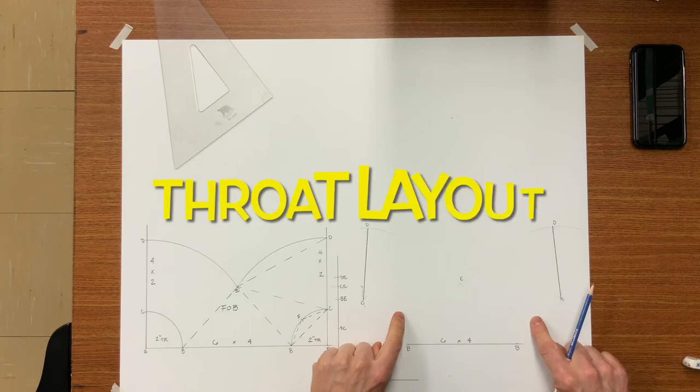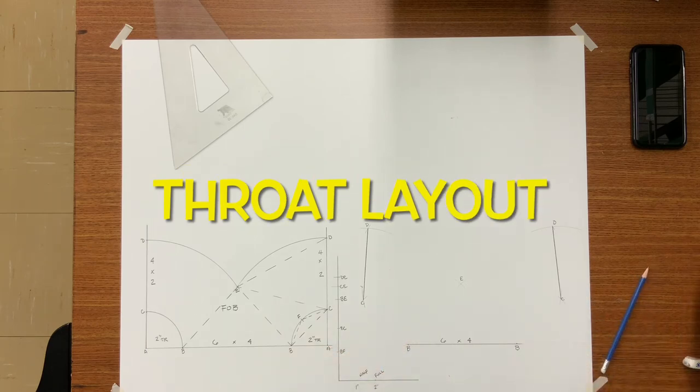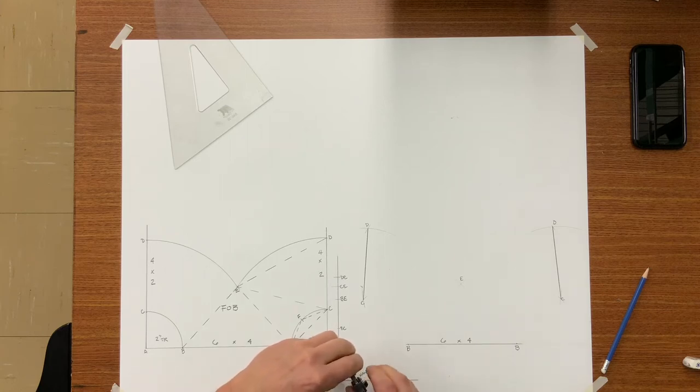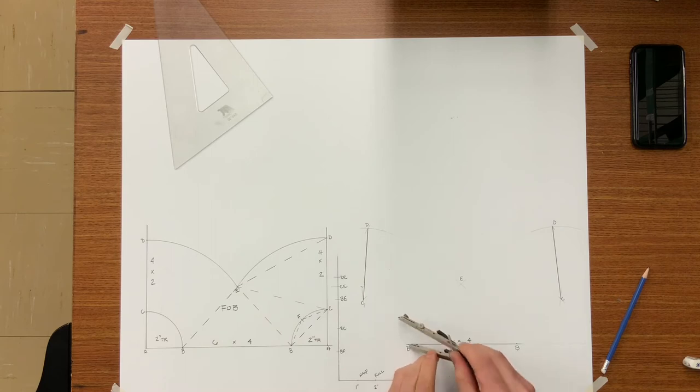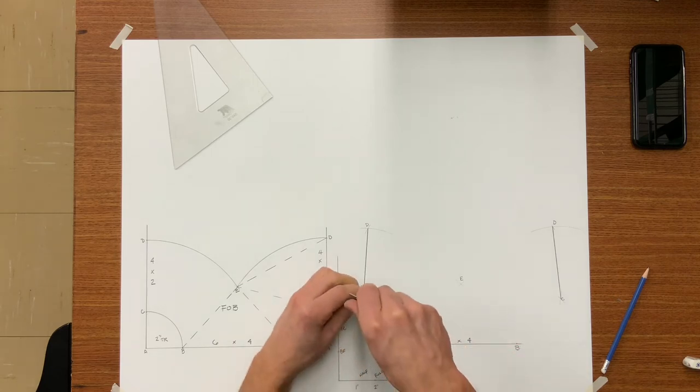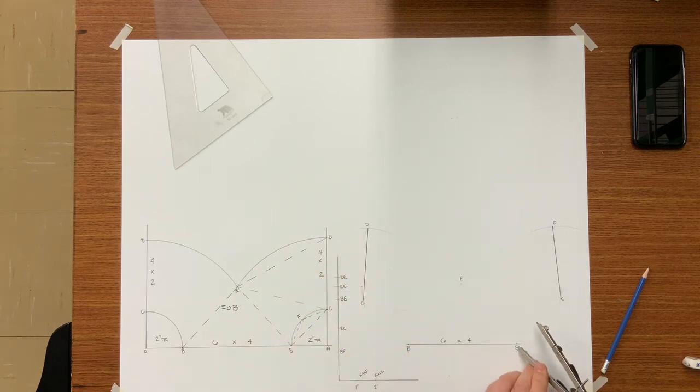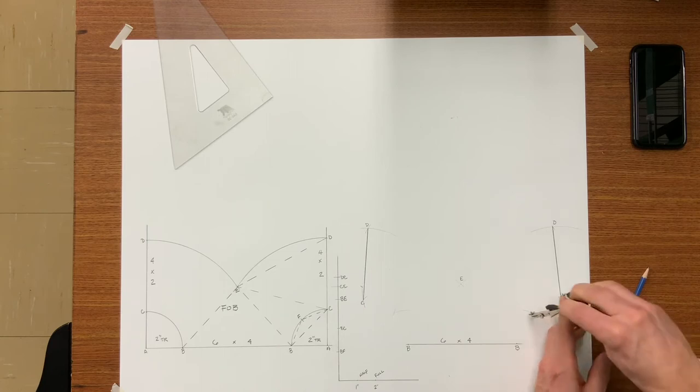Now let's go ahead and try to scribe the throat on our developed cheek. We will need to find F. F is done over a half drop. B to F and C to F are the same length, so let's do this on both sides because it is the same throat on both sides.